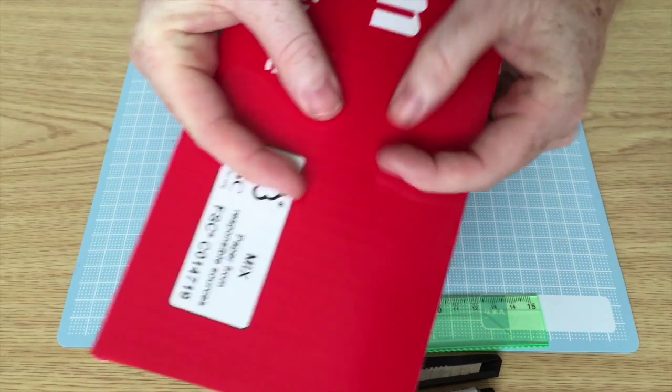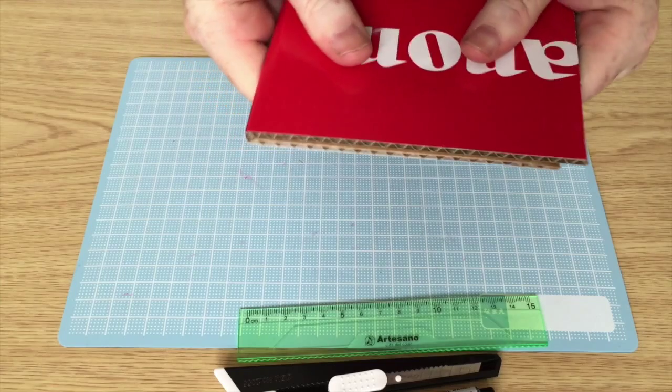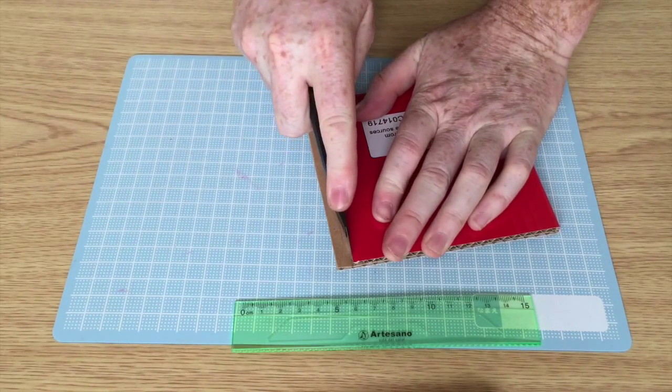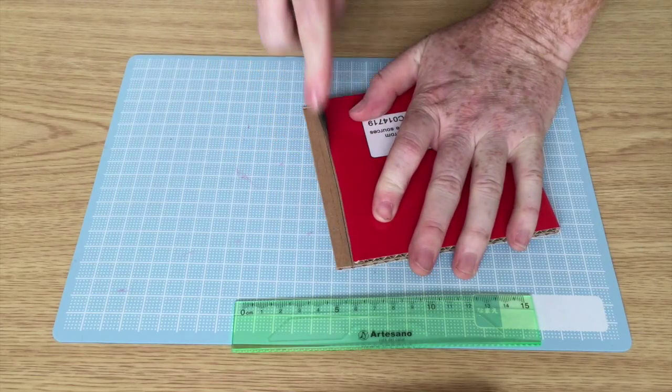First thing you need to do is just fold the box in half. If it doesn't fold equally, I like to just chop that off with the knife.